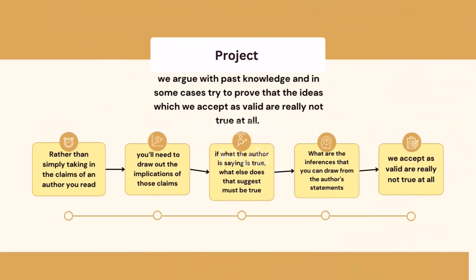It takes more than reading and absorbing what other people have written for research. We argue with past knowledge and in some cases try to prove that the ideas which we accept as valid are really not true at all. For example, rather than simply taking in the claims of an author you read, you'll need to draw out the implications of those claims. If what the author is saying is true, what else does that suggest must be true? What are the inferences that you can draw from the author's statements?